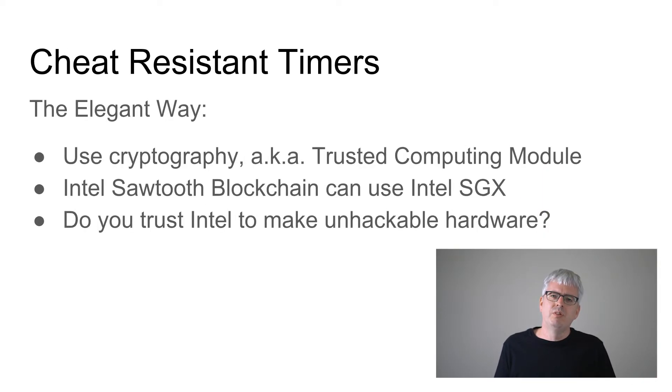There's the elegant way of making a cheat resistant timer, which is you write some code that runs in a cheat resistant processor using cryptography and trusted computing modules. That's actually a system that has been built. The Intel sawtooth blockchain has been built with code that does this kind of trusted computing thing. And it uses the Intel SGX module to make sure that no one can mess with your code. And then you have to ask yourself the question, do you trust Intel to build truly unhackable hardware that can't be cheated in any way, shape, or form? And I would love to say the answer is yes. But unfortunately, the trusted computing hardware is new enough that people have found vulnerabilities in it recently. And so the level of trust that most people have in this hardware to be truly resistant to a determined attacker is lower than I think you need it to be for something like a global spanning currency system. Kind of sad, but I wish it was different. It's the way it is.